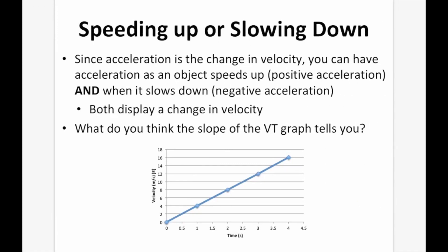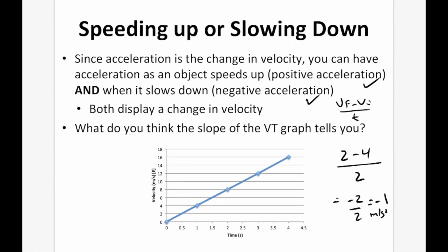Since acceleration is the change in velocity, you can have acceleration as an object speeds up — positive acceleration — and when it slows down — negative acceleration. Both represent vf minus vi over t. If final velocity is less than initial velocity, for example (2 − 4)/2, you get −1 m/s² — negative acceleration. If the final velocity is greater, (4 − 2)/2, you get +1 m/s² — positive acceleration, meaning speeding up.